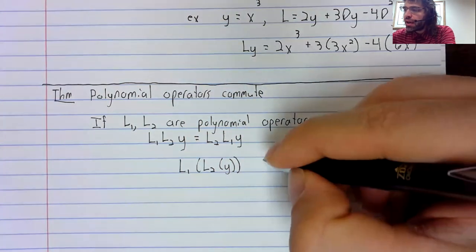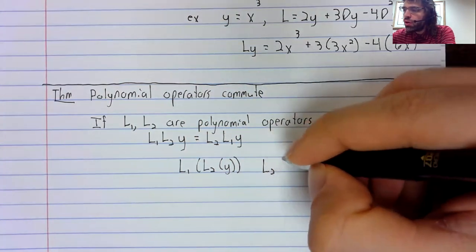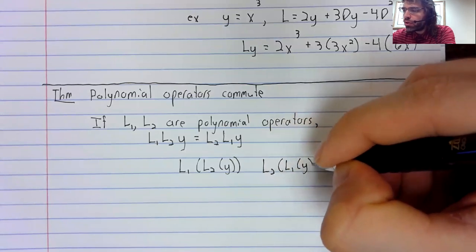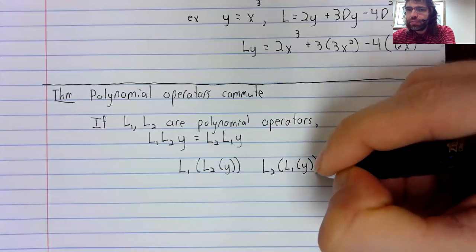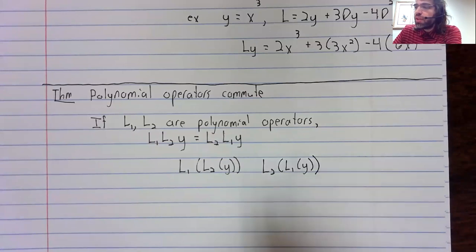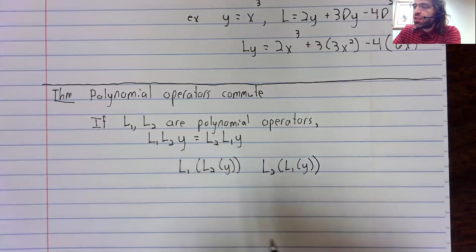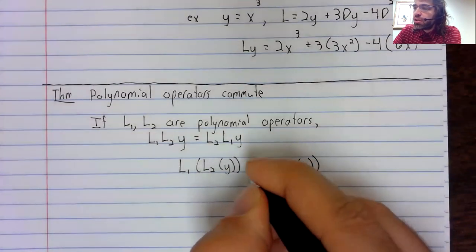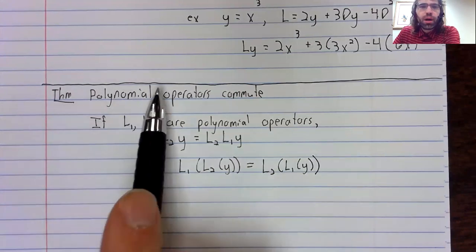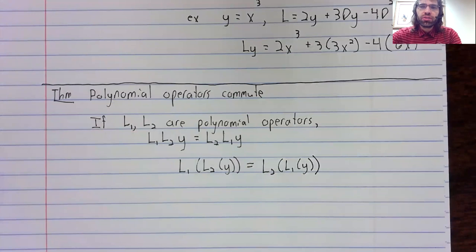L1 of L2 of y, and L2 of L1 of y. And ordinarily composition doesn't commute. For most functions, you would not expect this and this to be equal. But for polynomial differential operators, they are equal.